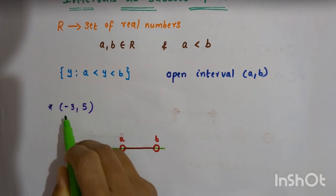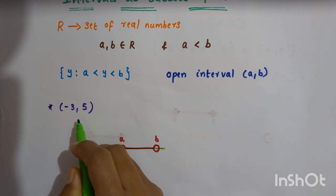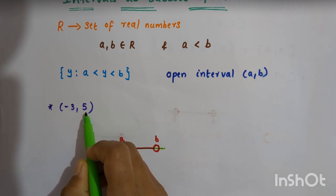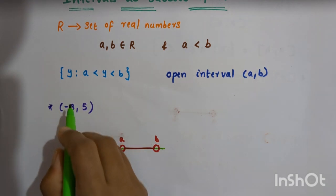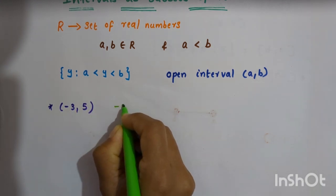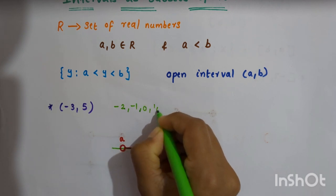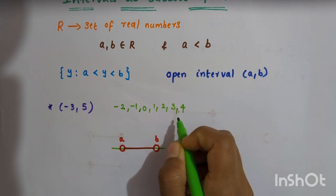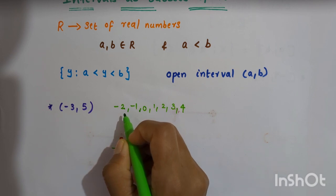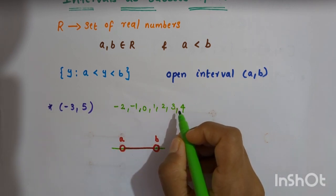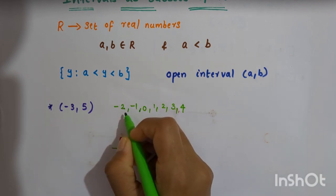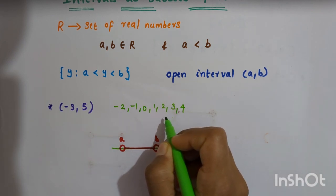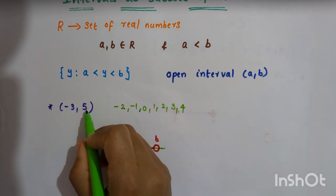For example, if we consider the open interval (-3, 5), the numbers belonging to this interval will be greater than -3 and less than 5. So the elements are: -2, -1, 0, 1, 2, 3, 4. Since we are considering the real number set, there can be infinitely many numbers between -3 and 5. We can also consider -2.1, 1.5, 2.3, 3.1, 3.2, 3.3, etc. — infinitely many numbers between -3 and 5.